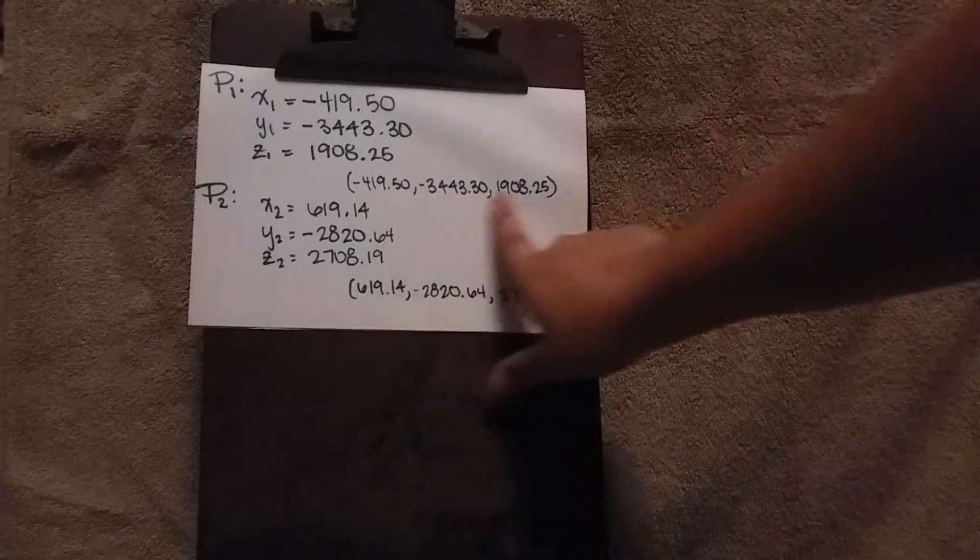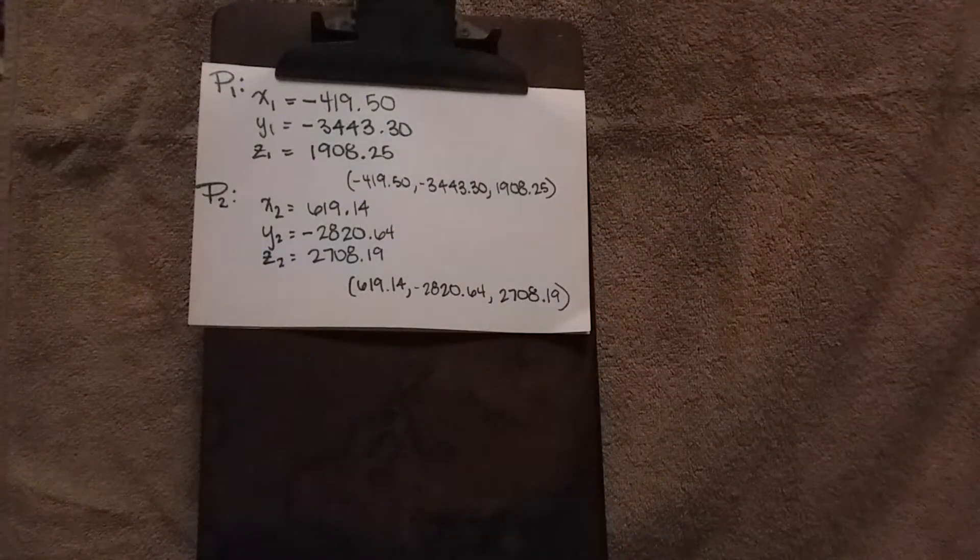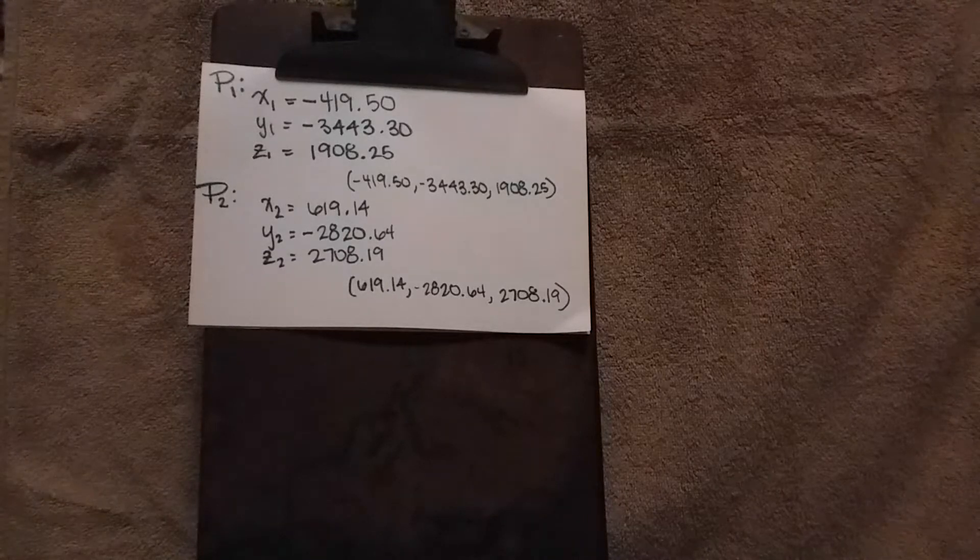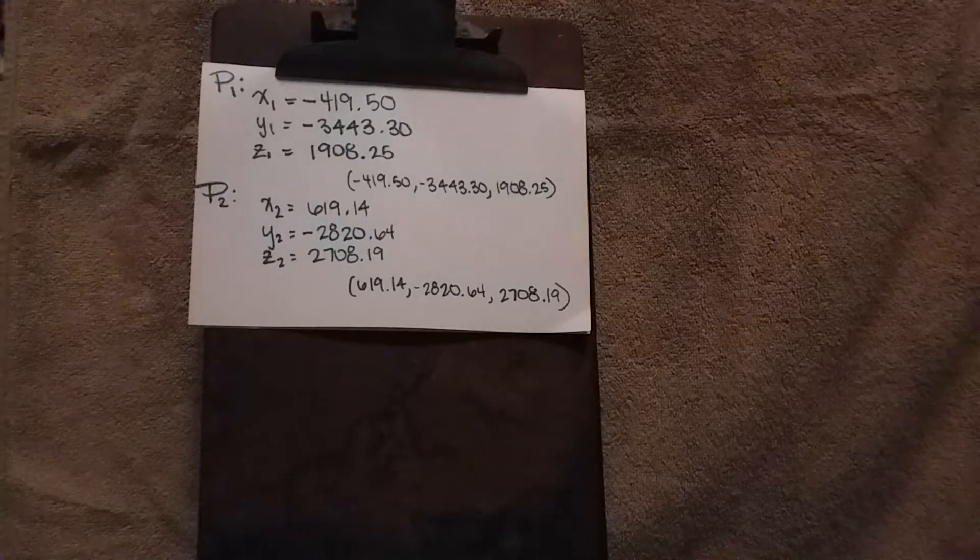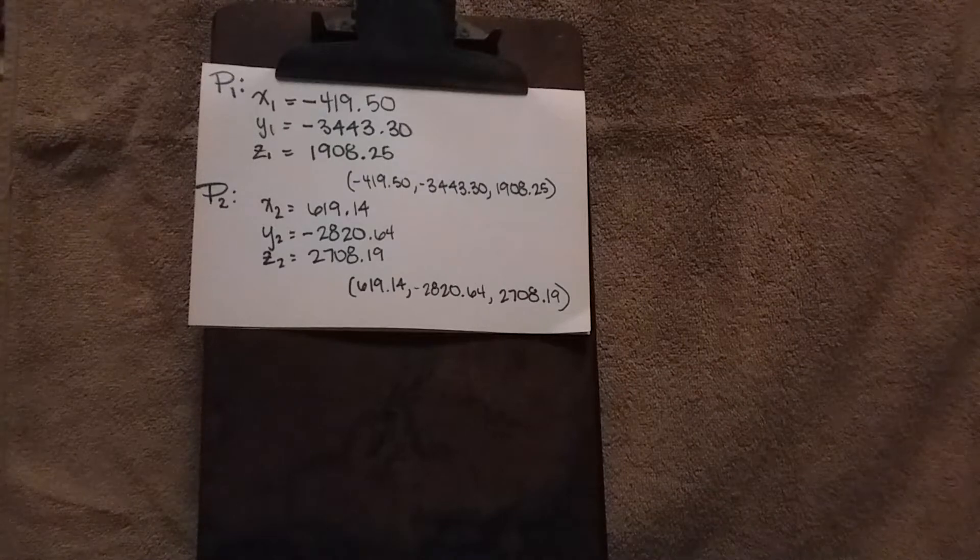Here we have point 1 and point 2. Notice that some of them are negative. It will not affect the outcome. In fact, it makes it easier to calculate because we can use it for any coordinates all around the globe.